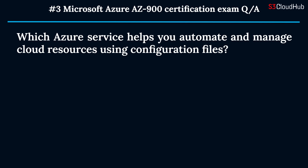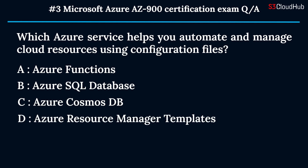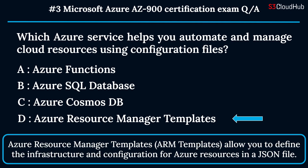The third question: which Azure service helps you automate and manage cloud resources using configuration files? Option A: Azure Functions. Option B: Azure SQL Database. Option C: Azure Cosmos DB. Option D: Azure Resource Manager Templates. The correct answer is option D: Azure Resource Manager Templates. ARM Templates allow you to define the infrastructure and configuration for Azure resources in a JSON file.